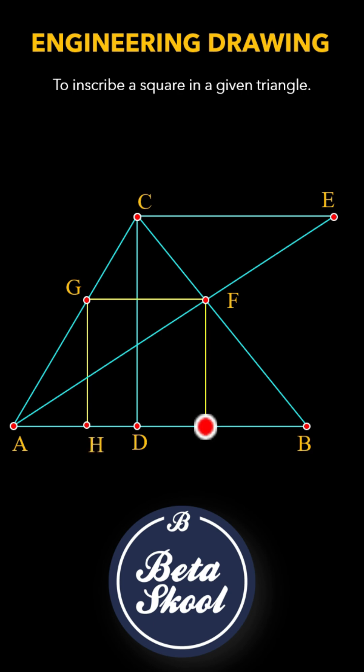From F, draw another line FJ, this time also parallel to CD. Finally, join point H to point J.